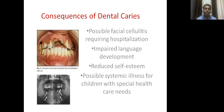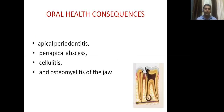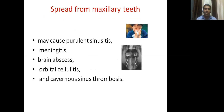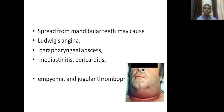Consequences of dental caries include possible facial cellulitis requiring hospitalization, impaired language development, reduced self-esteem, and possible systemic illness. Oral health consequences include apical periodontitis, periapical abscess, cellulitis, and osteomyelitis of the jaw. Spread from maxillary teeth may cause purulent sinusitis, meningitis, brain abscess, orbital cellulitis, and cavernous sinus thrombosis. Spread from mandibular teeth may cause Ludwig's angina, parapharyngeal abscess, mediastinitis, pericarditis, empyema, and jugular thrombophlebitis.